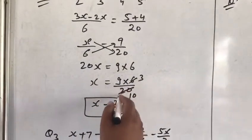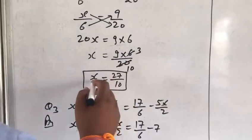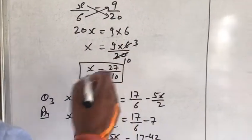2 into 3 is 6, 2 into 10 is 20. Now x equal to 9 into 3 is 27 upon 10.